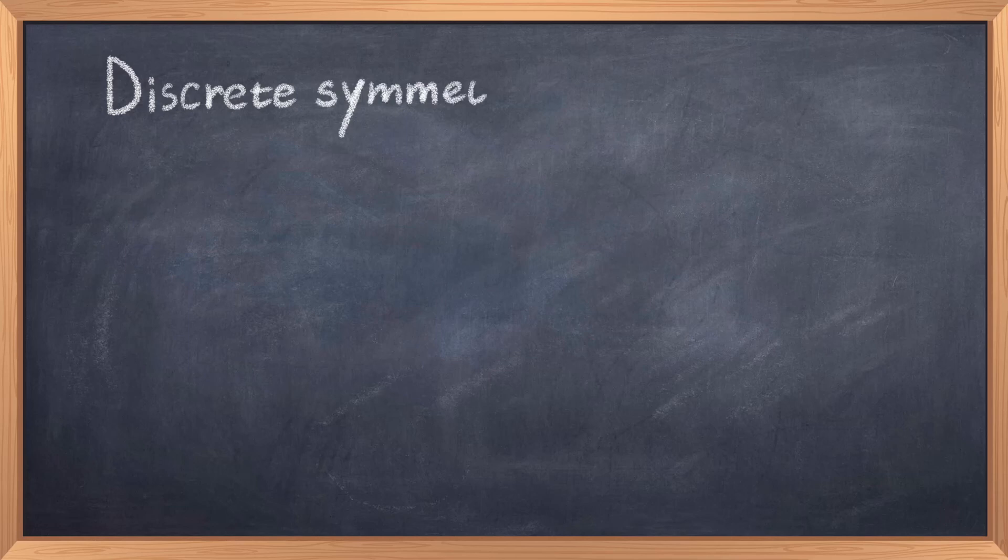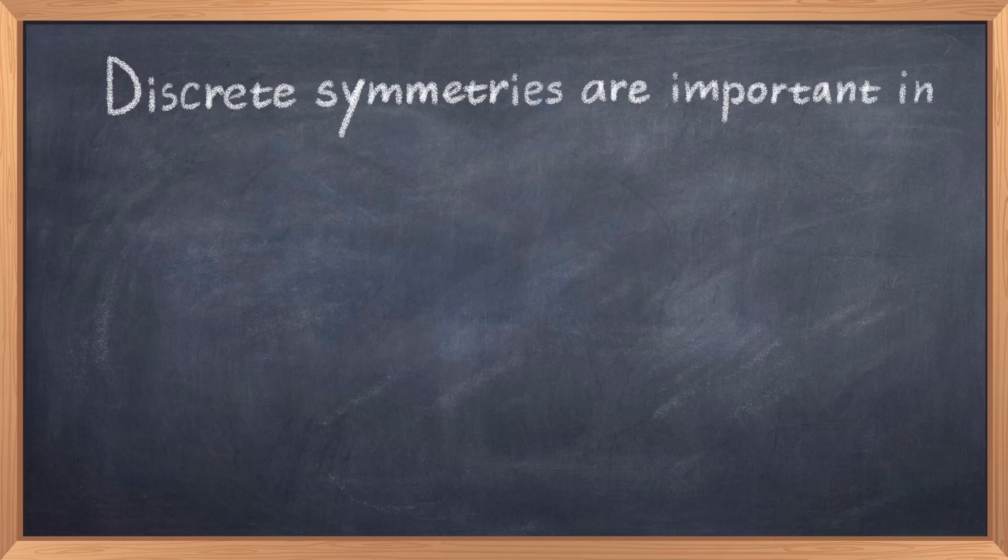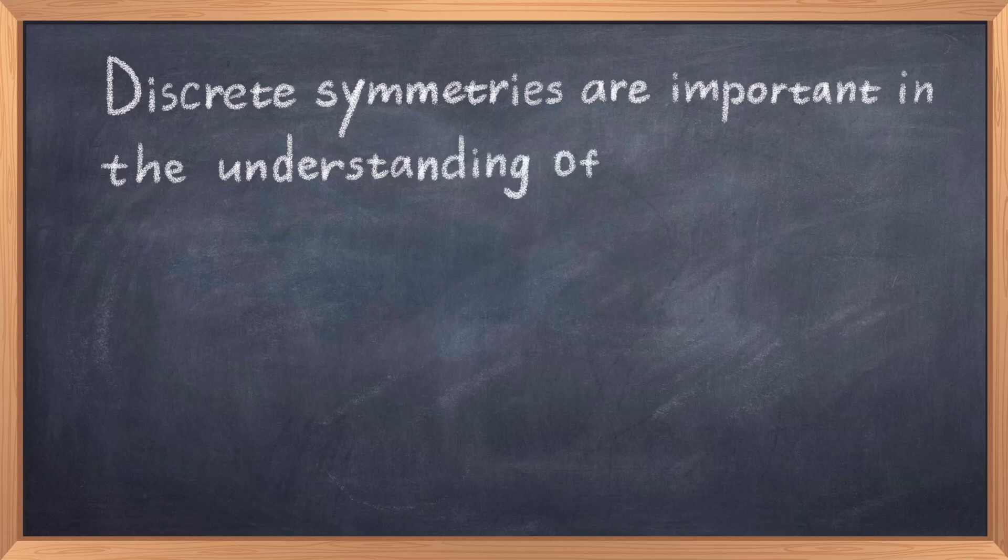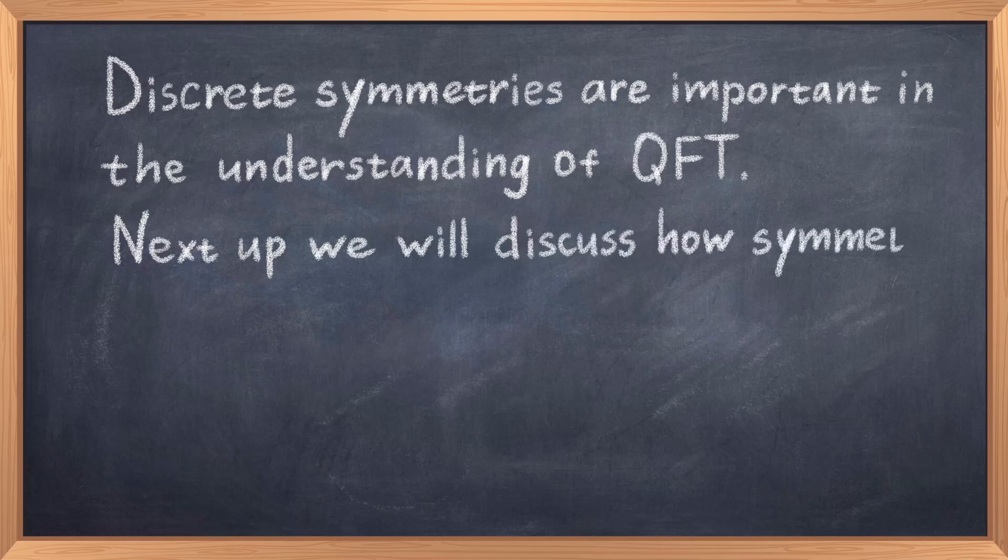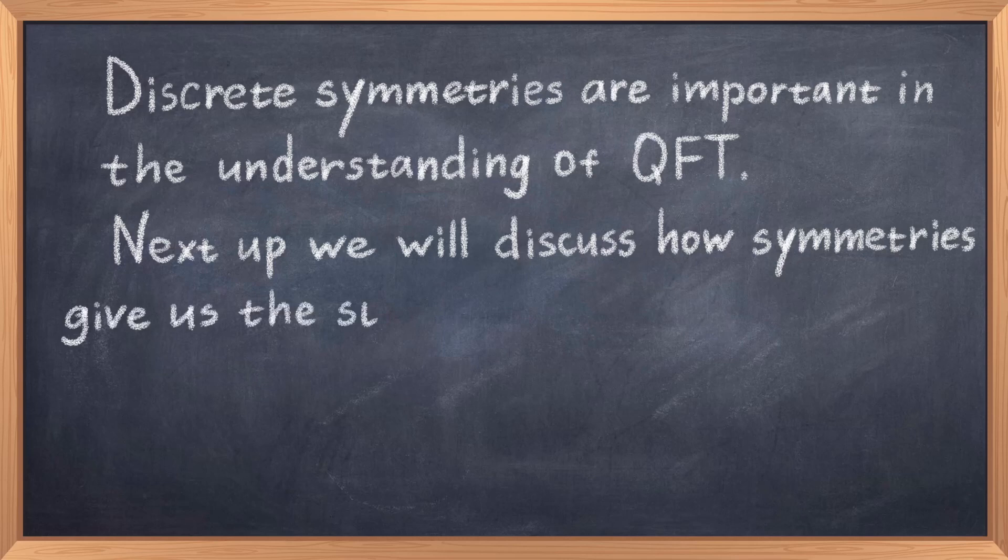These discrete symmetries are very important for quantum field theory and help us classify theories, like the fact that strong and electromagnetic force is symmetric under all these symmetries individually. As we will discuss later, symmetry is also the foundation of something called group theory, which is possibly even more important in quantum field theory. In the next video we will learn what a mathematical group is and how they are linked to symmetries, and then we will see that groups make up the structure of the standard model, and they explain a lot of why the standard model looks like it does, and why it works like it does.